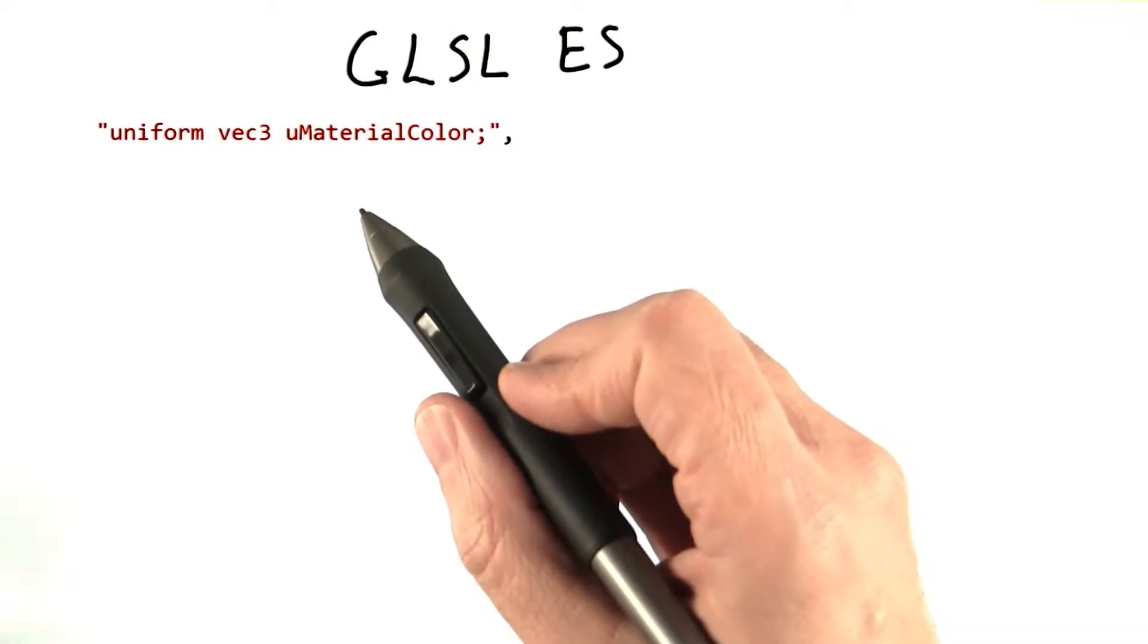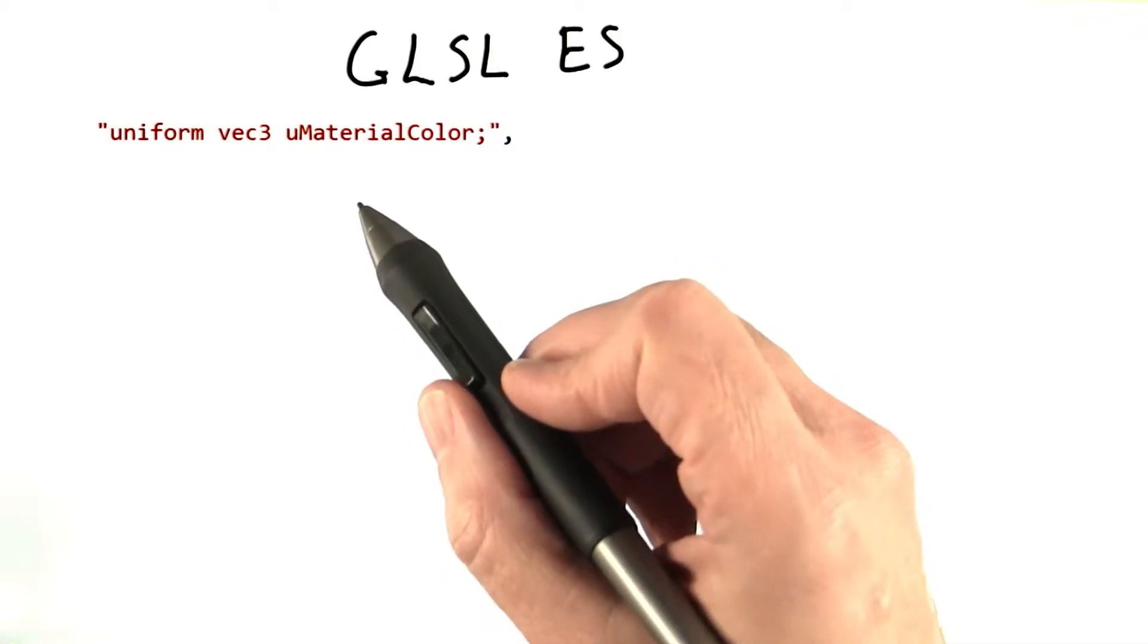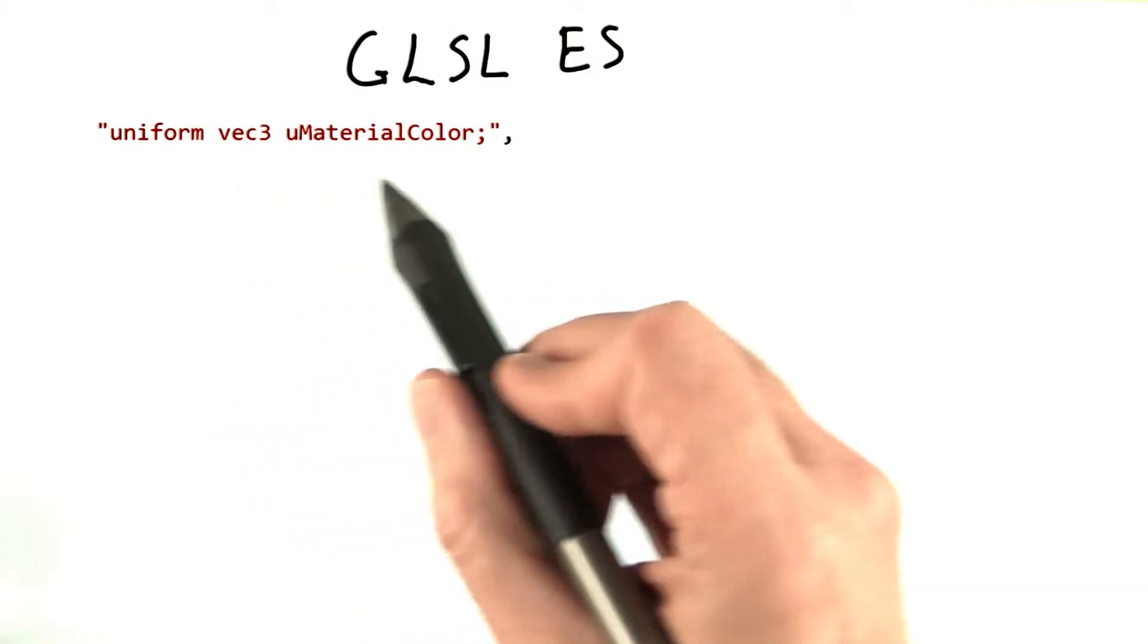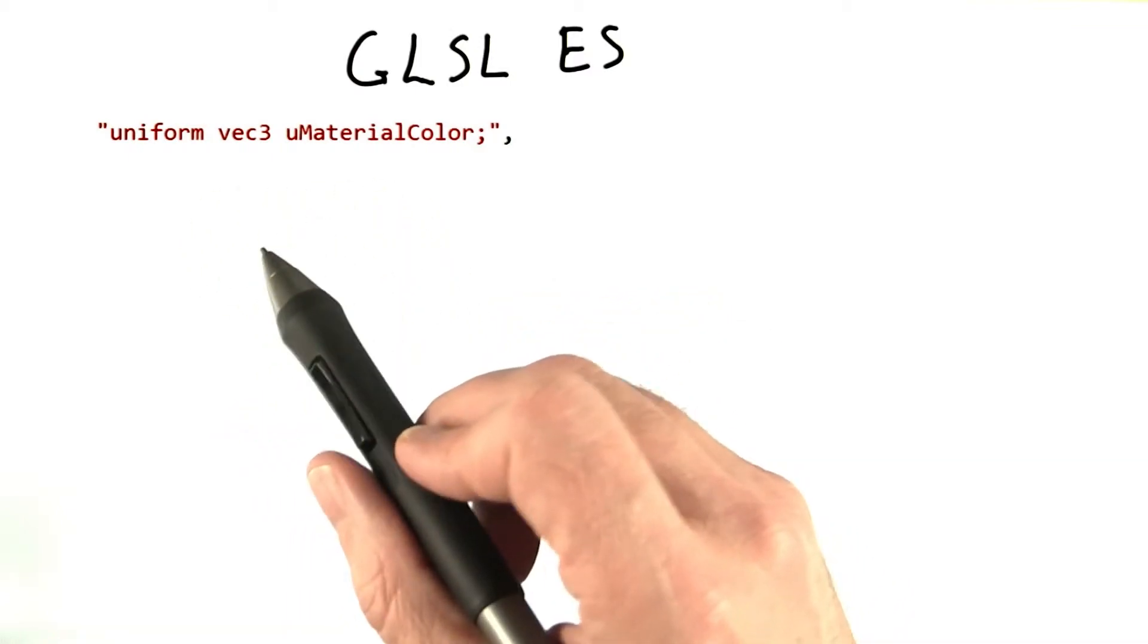The heart of a shader is the actual shader program it runs. This program is passed to the GPU as a string of characters. I'll repeat that since it's a bit unusual.